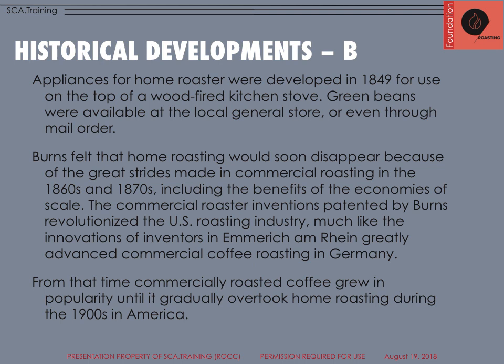Later on, appliances for home roasters were developed. By the mid-1800s, we were looking at wood-fired kitchen stoves, and green beans were available at the local general store or even through mail order. Burns felt that home roasting would soon disappear because of the great strides being made in commercial roasting by the late 1800s. Economies of scale and concerns like smoke led to commercial roaster inventions patented by Burns — you might recognize the name from Burns Probat. Other inventors, such as Emmerich Almrain, greatly advanced commercial coffee roasting in Germany. From that time, commercially roasted coffee grew in popularity until it gradually overtook home roasting during the 1900s in America.